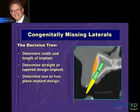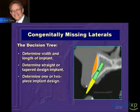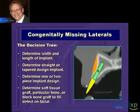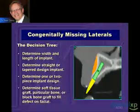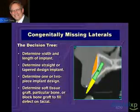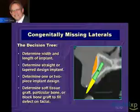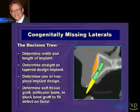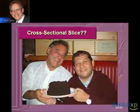We want to look at that concavity to determine what kind of procedure we are going to use to replace that missing vital anatomy. Now, some people look at cross-sectional slices and it means something to them, and some people look at cross-sectional slices and it may just mean a nice piece of cake for dessert.